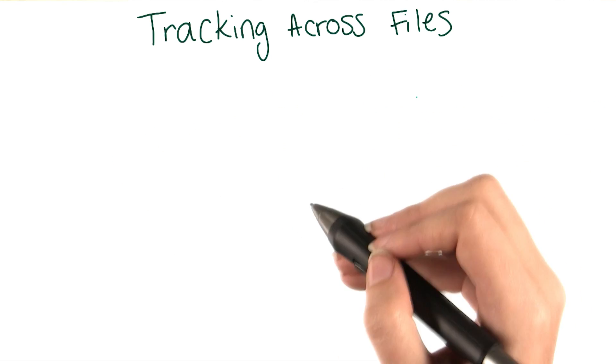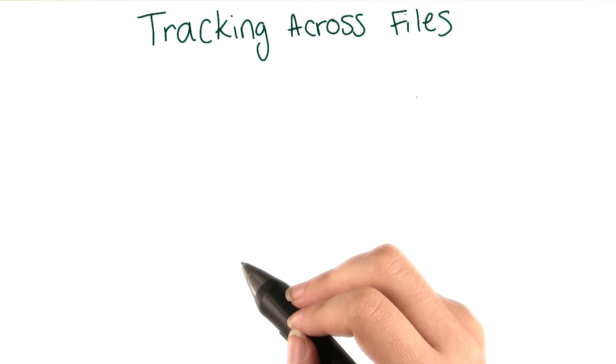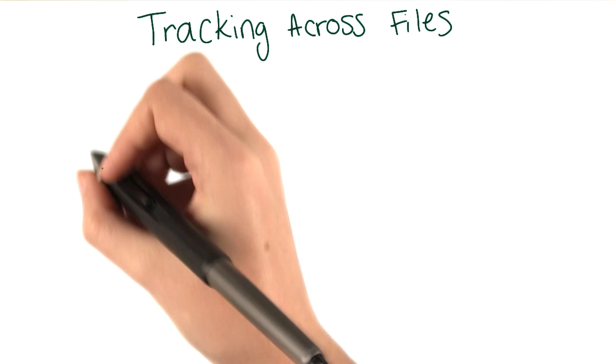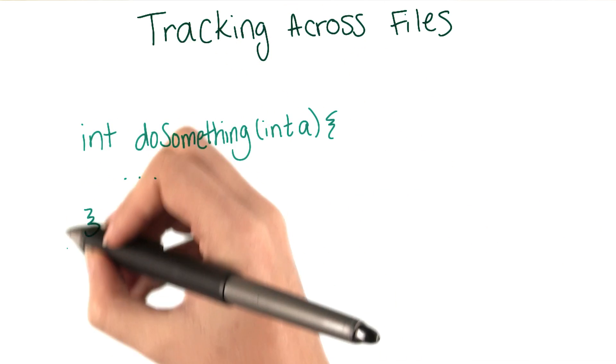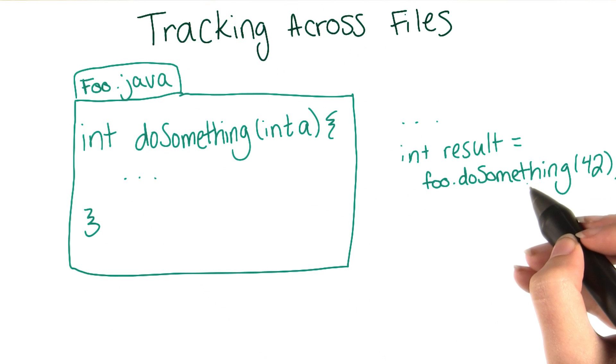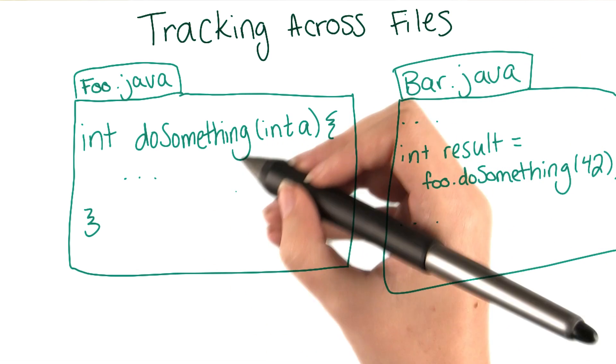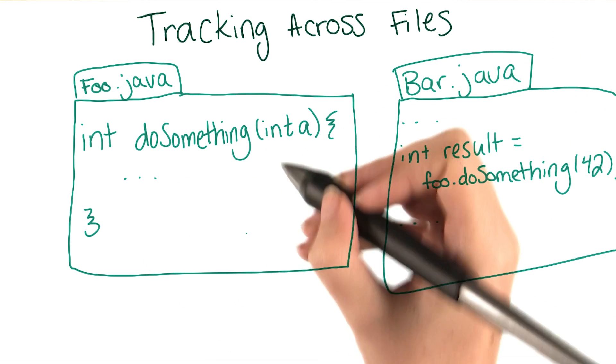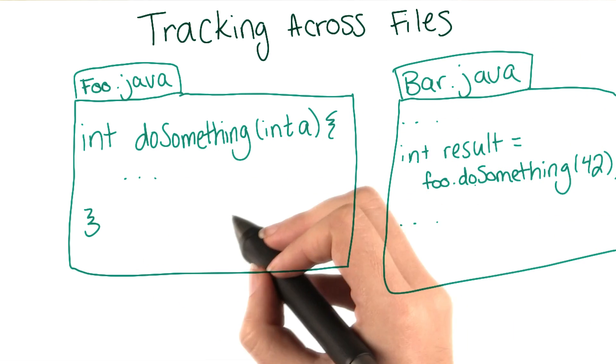When writing code, in many languages, it's common to have features that span multiple files. Let's say you have a function that currently takes one argument, defined in one file, and a call to this function in another file. If you want to change this function to take an additional argument, you will need to simultaneously change code in both files.